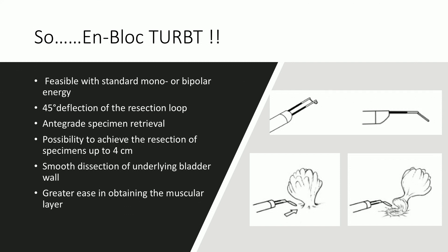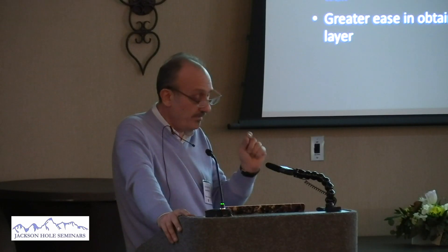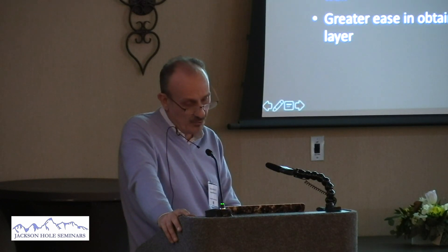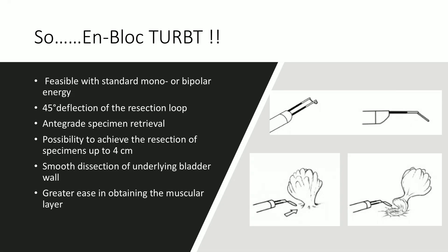So what does en-bloc TUR-BT offer in addition to classic TUR-BT? We know it is feasible with standard monopolar, bipolar, or any kind of laser energy. In my hands, I used the standard instrument with one modification — a little bend, around 90 degrees. The most important thing is that you do not have an acute angle, because then the edge of the loop will hit the lesion. Once you make this little change, you are able to do an antegrade ablation of the tumor.